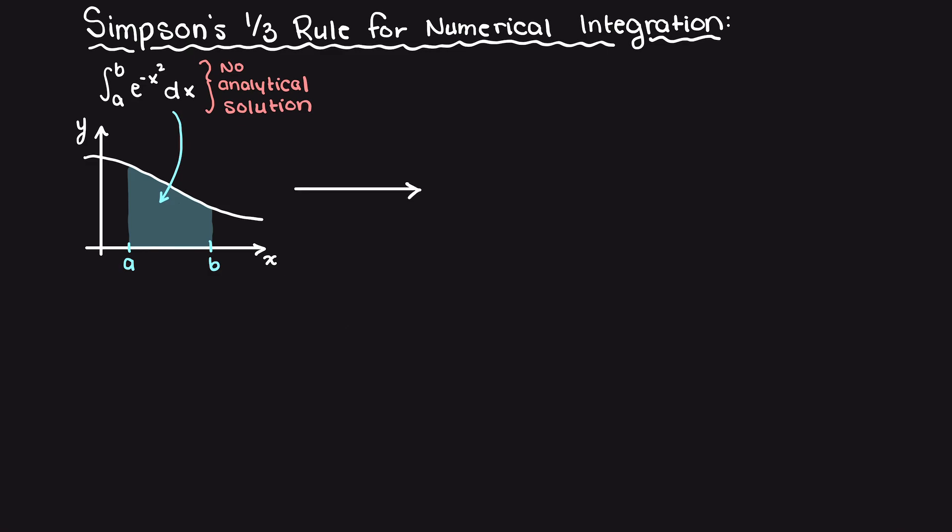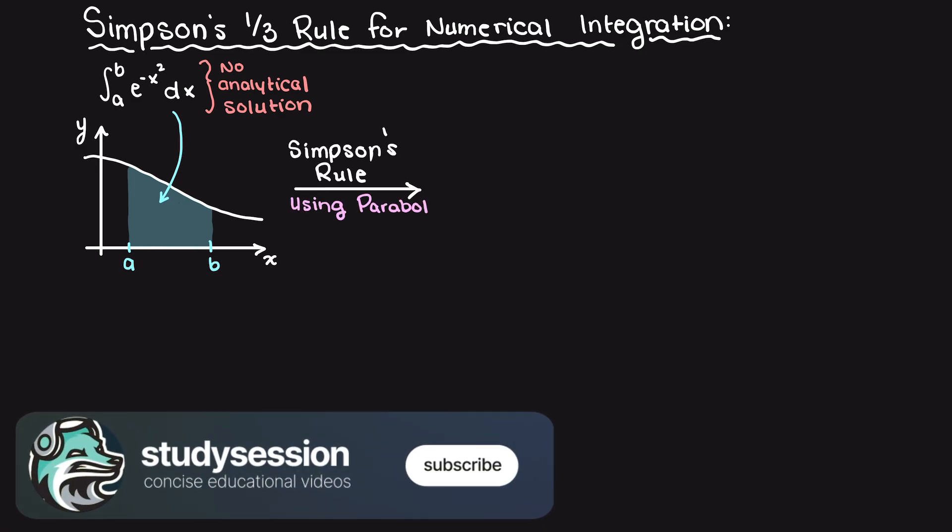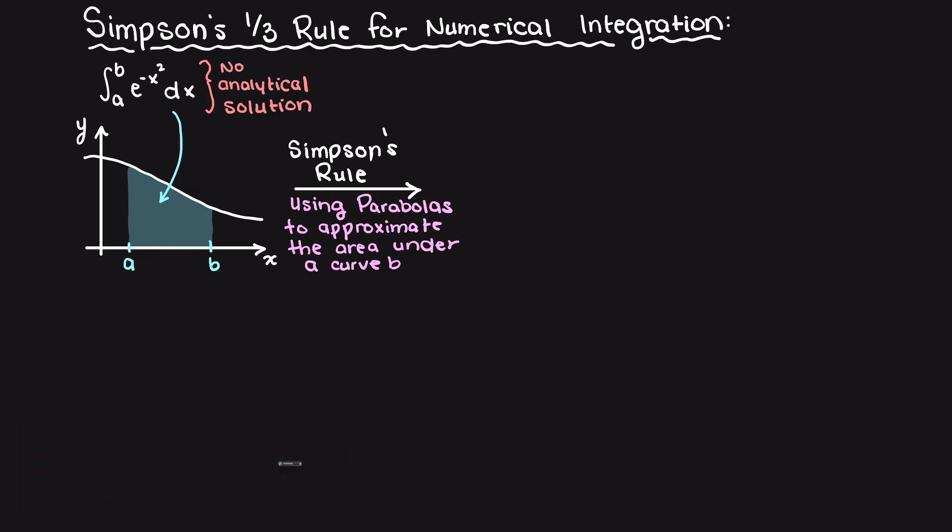Unlike Riemann's sums and the trapezoid rule, Simpson's rule will use parabolas to estimate the area under our curve. So let's create our curve here and show what that looks like before going further into the derivation.